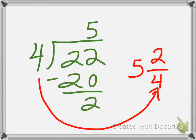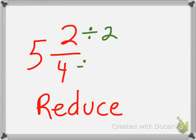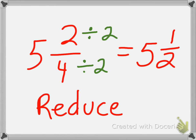But we see 5 and 2 fourths, I think we can reduce that. So we're going to reduce, divide 2 by 2, numerator by 2, and the denominator by 2. And we get 5 and a half.